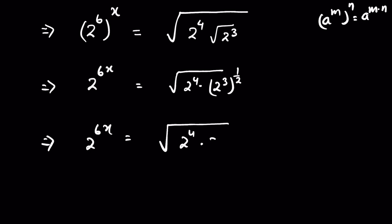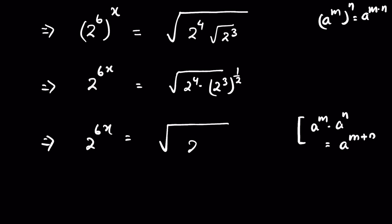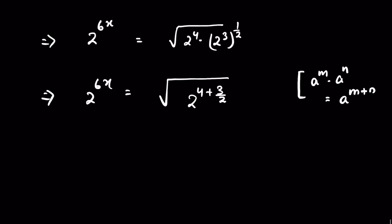So 2 raised to the power 6x is equal to 2 raised to the power 4 times 2 raised to the power 3 upon 2. We know the identity: a raised to the power m times a raised to the power n equals a raised to the power m plus n. So here we can write 2 raised to the power 4 plus 3 upon 2.